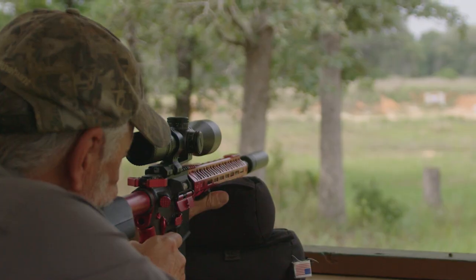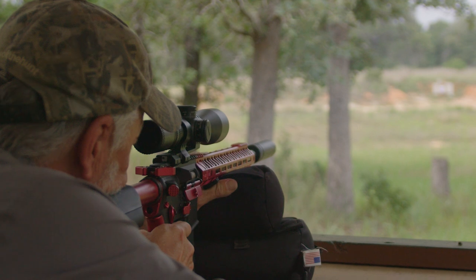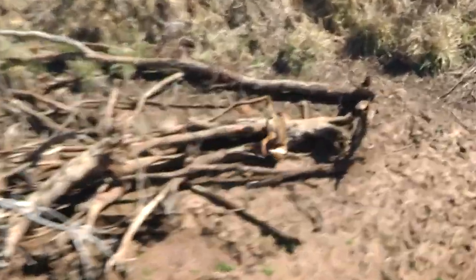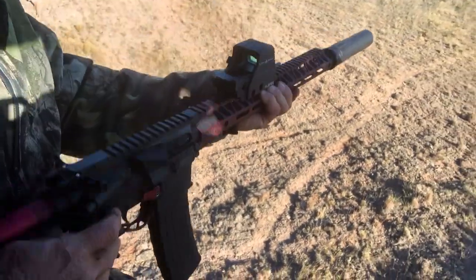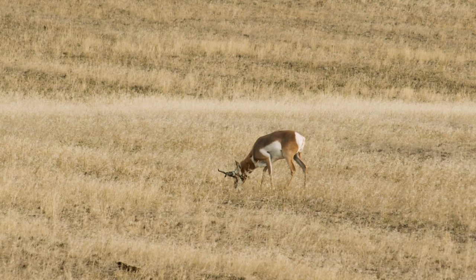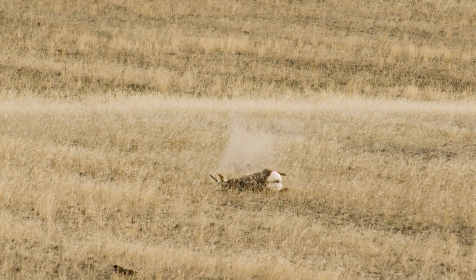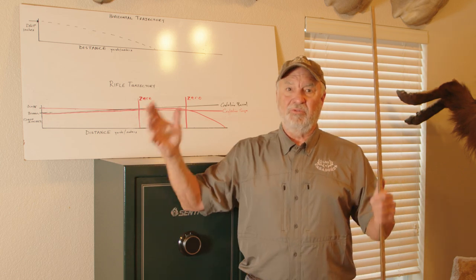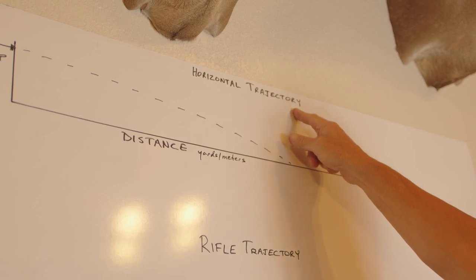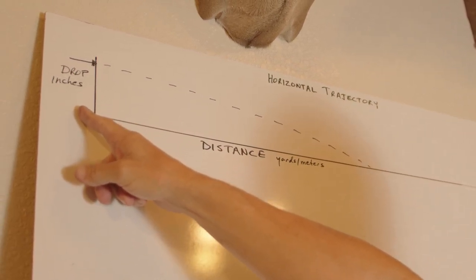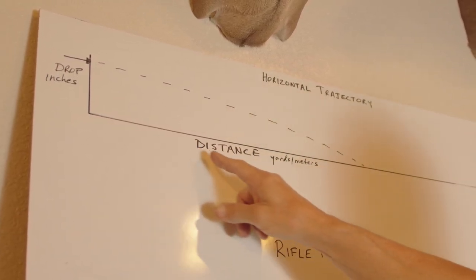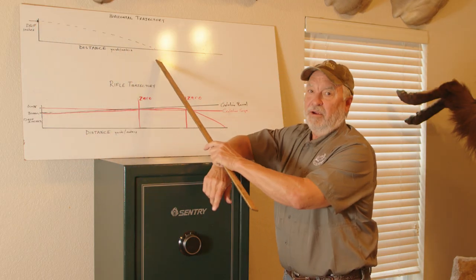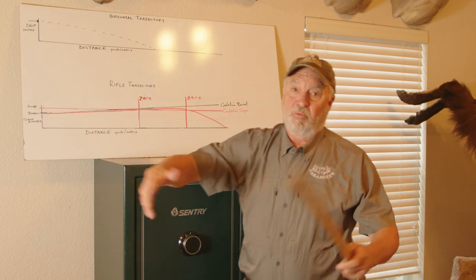Bullets are nothing more than projectiles, and some of the things that affect bullets are the resistance to the bullet traveling through the barrel. Another thing is wind — ask any shooter who's shot on windy days, they can tell you how much bullet drift the wind can cause, especially in really severely windy conditions. But this video, we really want to focus on bullet drop. So this is horizontal trajectory. This vertical line represents height or inches, and the horizontal line right here is distance in yards or meters. Keep in mind, the bullet's going to leave here and somewhere out here it's going to hit the ground, depending on what rifle you're shooting.